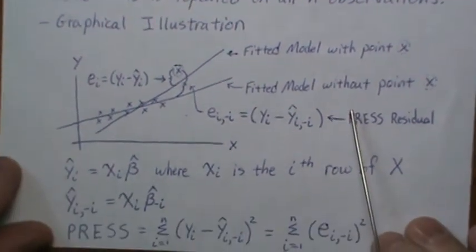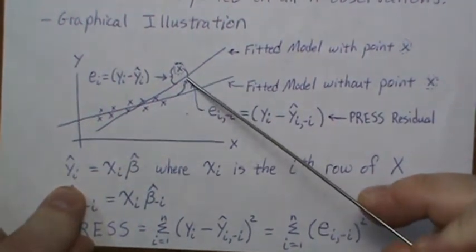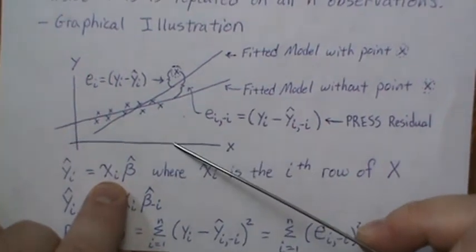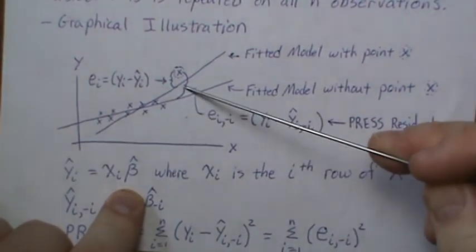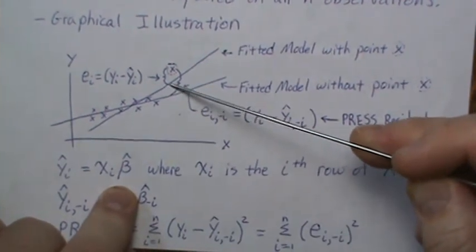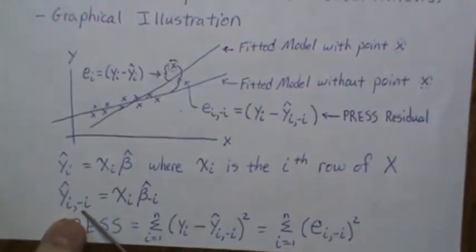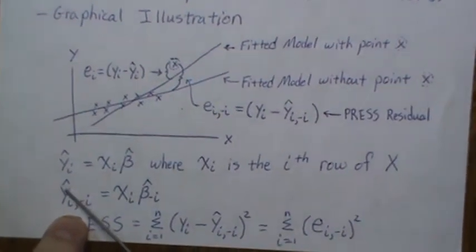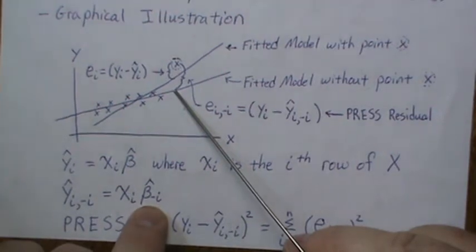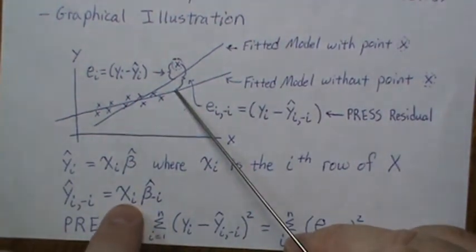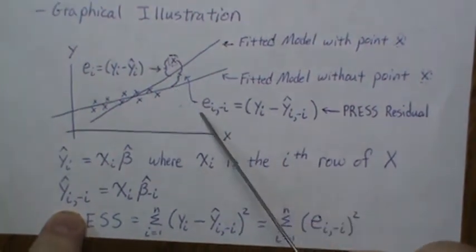We need to develop some notation. Y_i_hat is the fitted value using the full dataset — the X_i observation times the least squares estimates obtained from the full model, where X_i is the ith row of the design matrix. Y_i_minus_i_hat is the fitted value using least squares estimates obtained without the ith data point, but then using the ith point to predict the ith Y value. The difference between Y_i and Y_i_minus_i_hat is the PRESS residual.